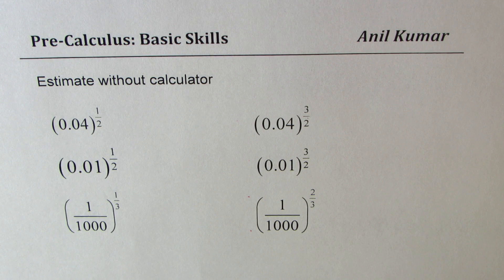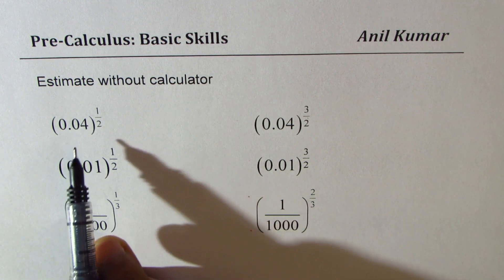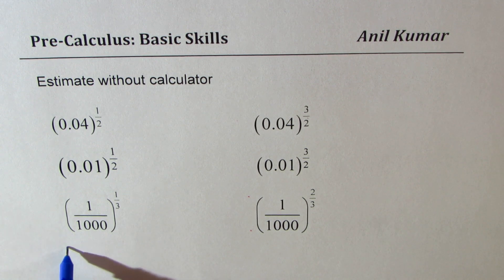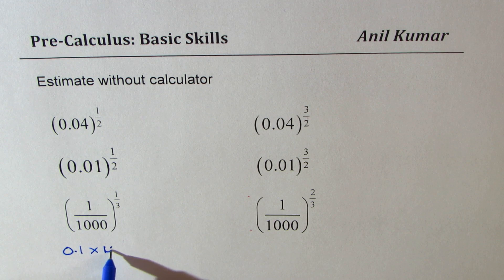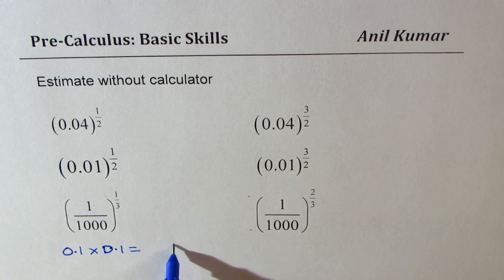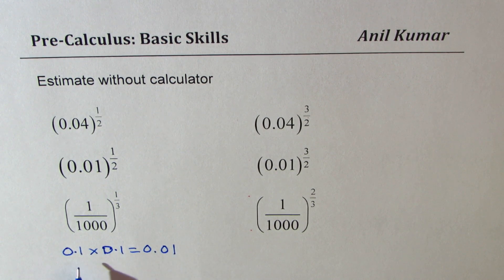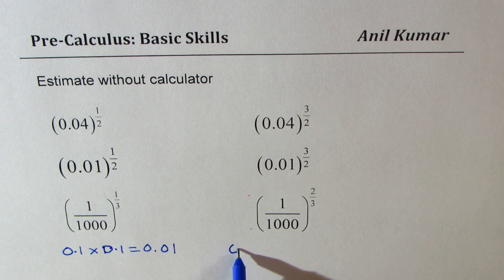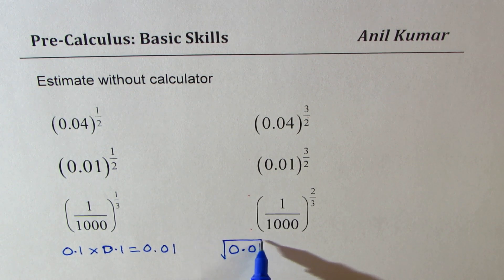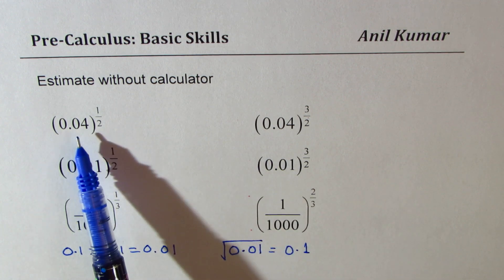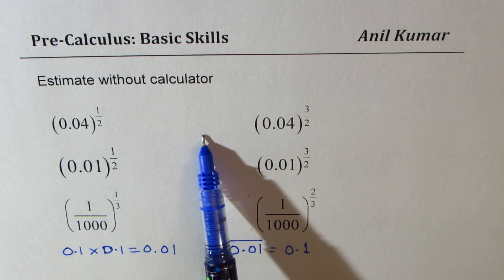Let's move on and take some numbers with decimal numbers — decimal numbers are very tricky. Before getting into the examples, let's understand what happens when I multiply 0.1 by 0.1: 1 times 1 is 1, but I need 2 decimal places, so the result is 0.01. On the other hand, the square root of 0.01 is 0.1. This is the key strategy in solving these types of questions — once you calculate the left side, you can use that result to calculate the right side.